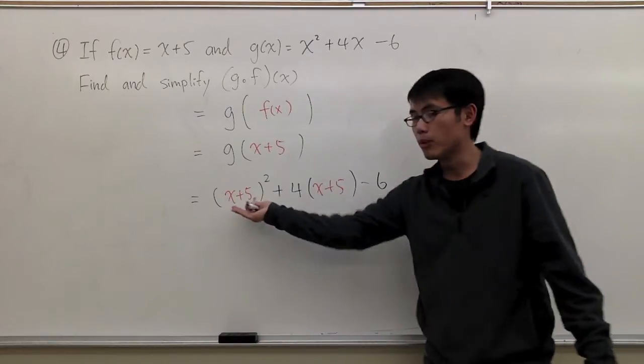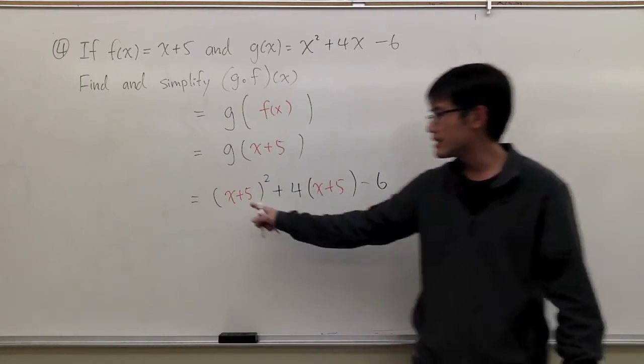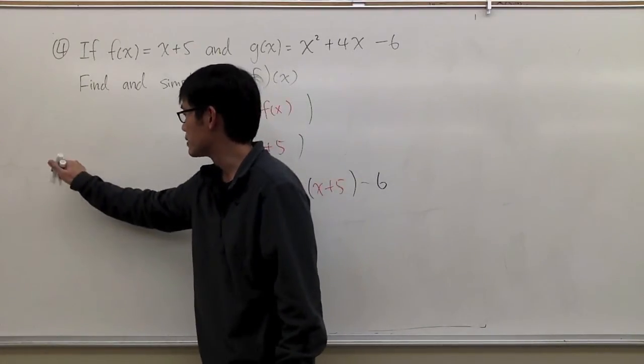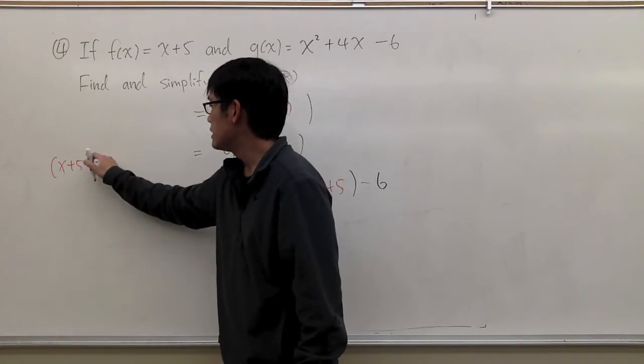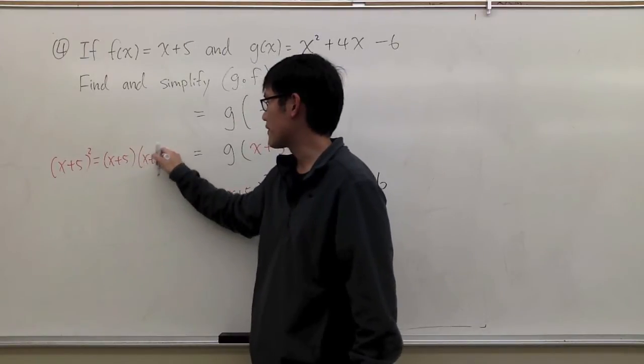But then we still have to multiply this out, distribute, combine terms. Let's do this one first: x plus 5 squared. Let me do it on the side right here. Let me do some scratch work. x plus 5 squared. This means I have to do x plus 5 times x plus 5.